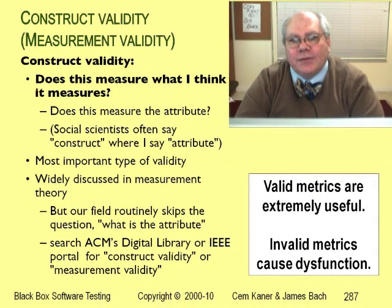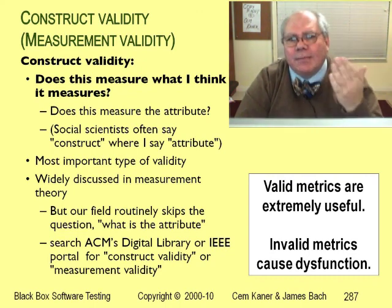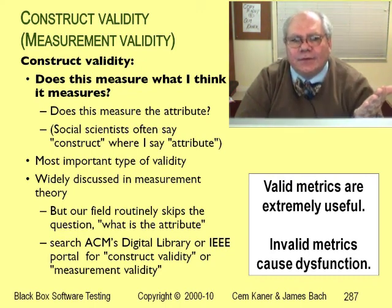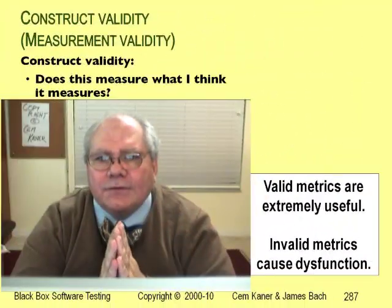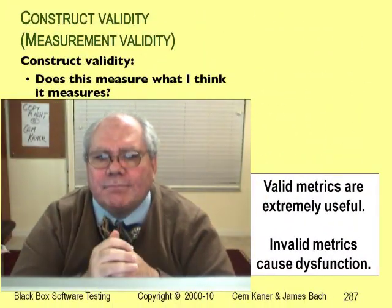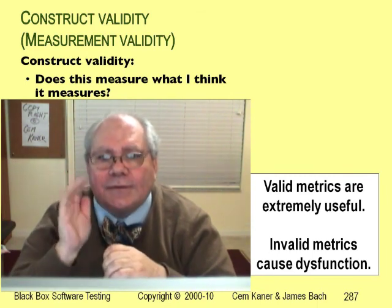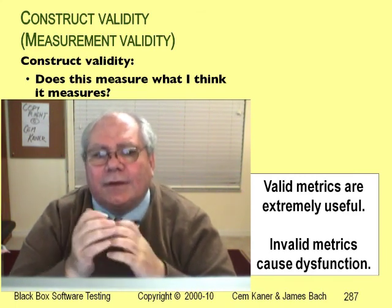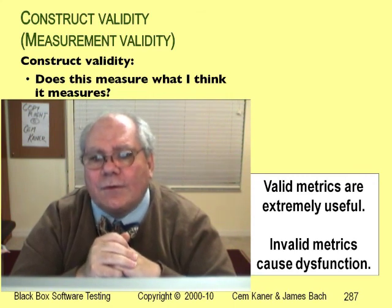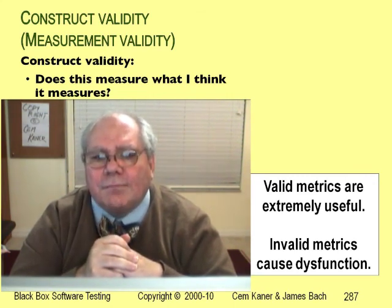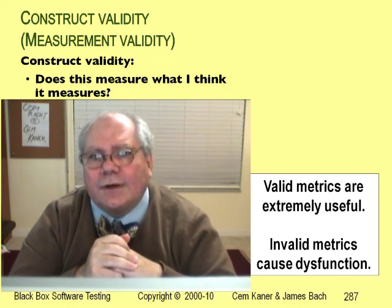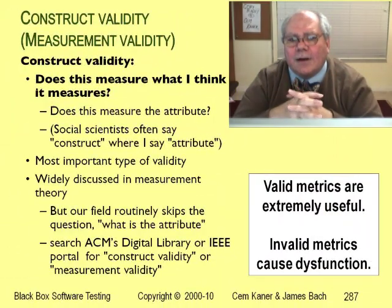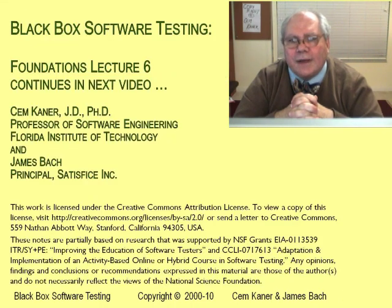Measurement theorists often talk about the validity of a measurement. If we want to measure programmer skill this way, is that measurement valid? Does it really tell us about programmer skill? My first doctorate was in psychophysics — a field that applies measurement theory to subjective magnitudes, like how loud something feels or how hot something is. I've read about theory of measurement in many fields: chemistry, economics, medicine, physics, psychology, sociology, and so on. Every other field I've studied has a more sophisticated approach to measurement and pays more attention to validity than computer science and software engineering. We spend a lot of time arguing about how to write programs to count things efficiently, but we spend almost no time on the measurement validity of those counts.